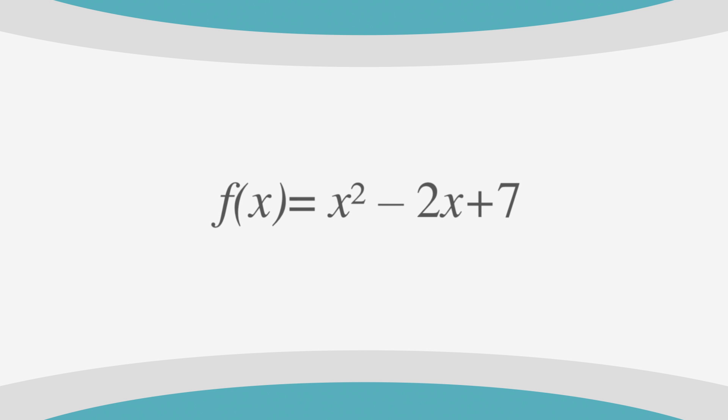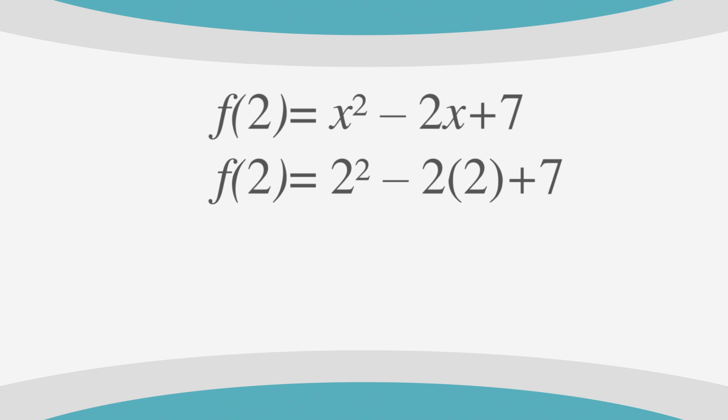Remember that the value in the parentheses is the value of x. In this case, we know that x is 2. If we put 2 into the equation in place of x, we get f(2) equals 2 squared minus 2 times 2 plus 7. Solving this equation, we find that the answer is 7.